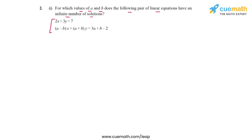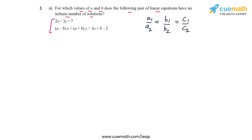For an infinite number of solutions, the condition that needs to be satisfied is that A1 by A2 — the ratio of the coefficients of x — should be equal to B1 by B2, the ratio of the coefficients of y, and this should be equal to C1 by C2, the ratio of the constant terms. That is the constraint we will impose on the coefficients of this pair.